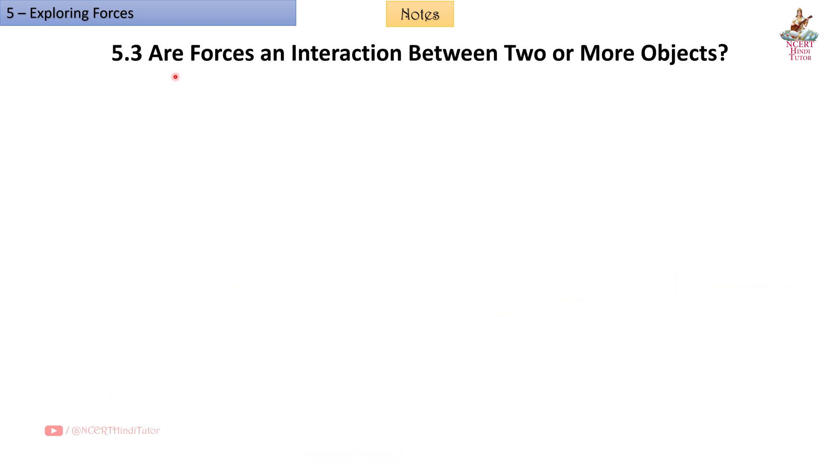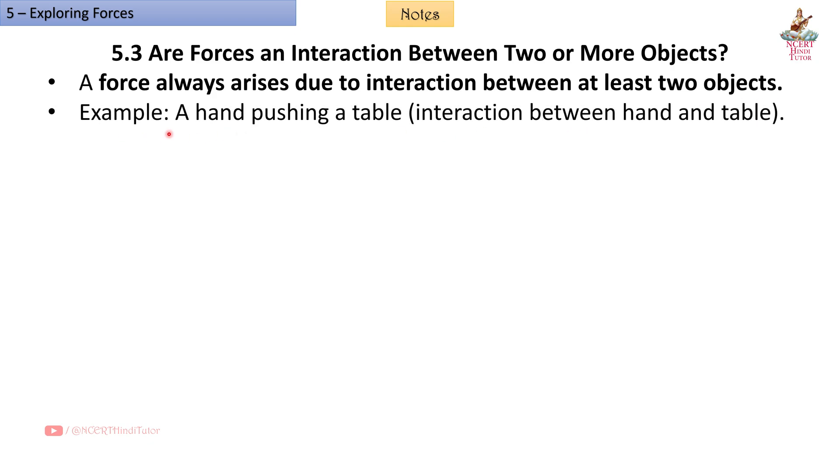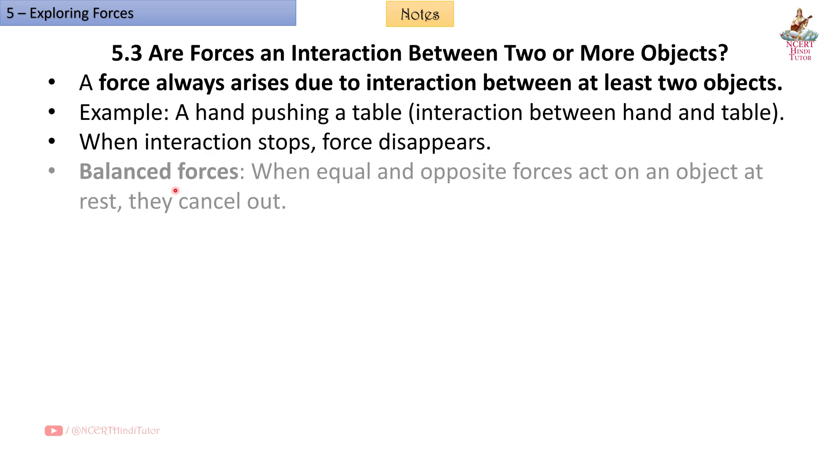5.3 Forces and interaction between objects. A force always arises due to interaction between at least two objects. For example, a hand pushing a table involves interaction between hand and table. When interaction stops, force disappears. Balanced forces: when equal and opposite forces act on an object at rest, they cancel out. Conclusion: no force exists without interaction.